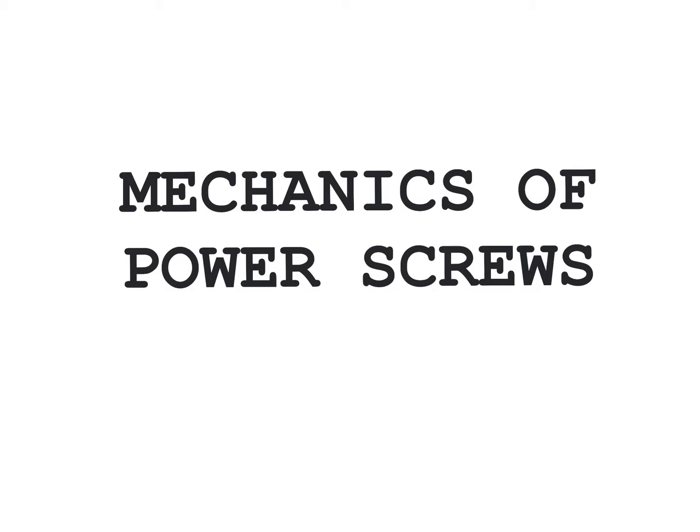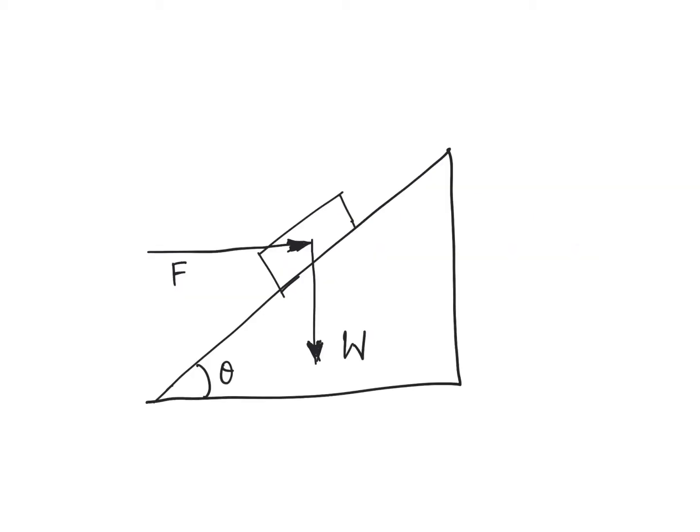Without much ado, let's get started. One of the key concepts that came from the previous video was the mechanical advantage that is involved when you have a block of this kind resting on an inclined plane. The weight of this particular object is capital W and it is resting on an inclined plane with an inclination of theta and the coefficient of friction between this particular body and the inclined plane is mu. Then we were interested to compute what is the minimum force that is required to slide this particular block up this inclined plane.